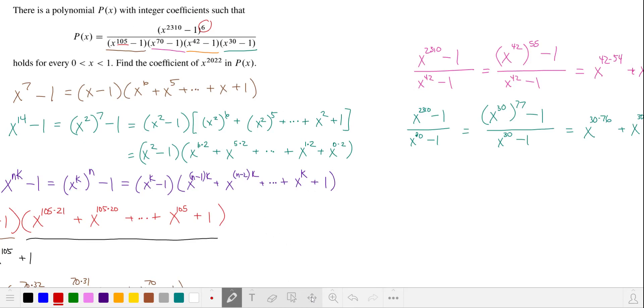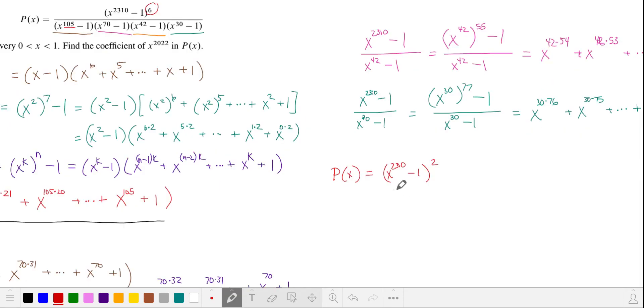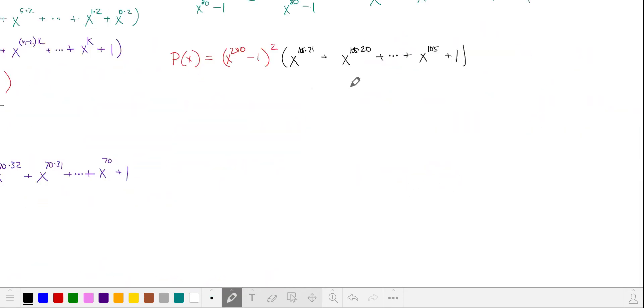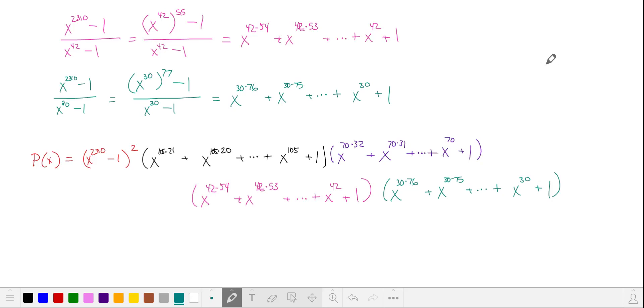Let's rewrite p of x after all of these cancellations. Here are our two remaining factors. Here's our next factor when we do our first cancellation. And here are the rest of our factors.